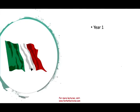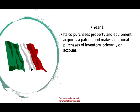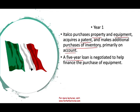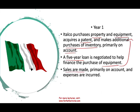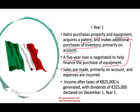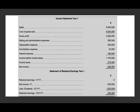Throughout year one, the Italian company purchased property, plant, and equipment, acquired a patent, and purchased additional inventory primarily on account. They negotiated a five-year loan to help purchase the equipment, made sales primarily on account, and incurred expenses. Income after taxes was €825,000 and dividends declared were €325,000. If you don't have the PowerPoint slides — available on my website — copy the data down.